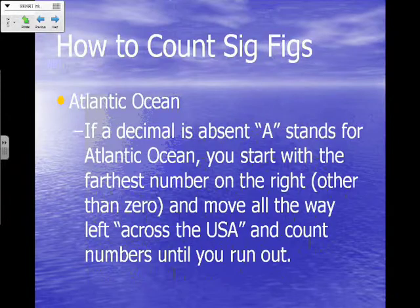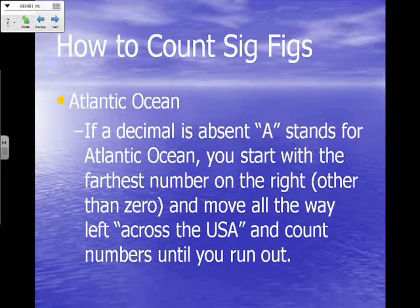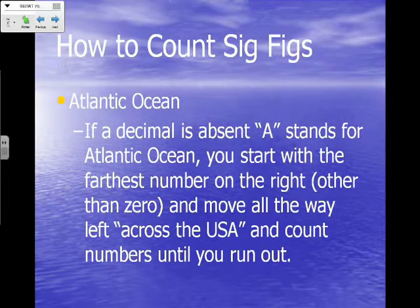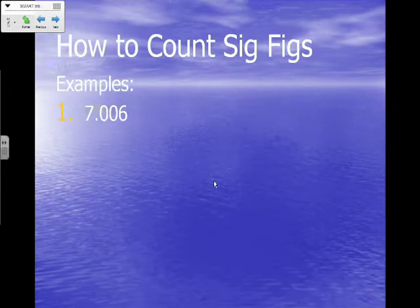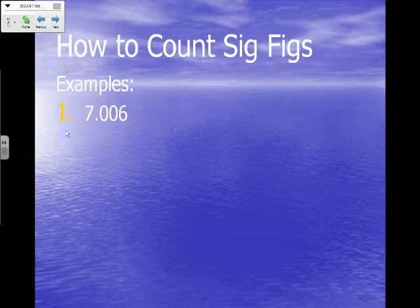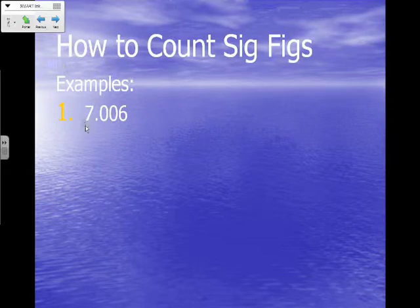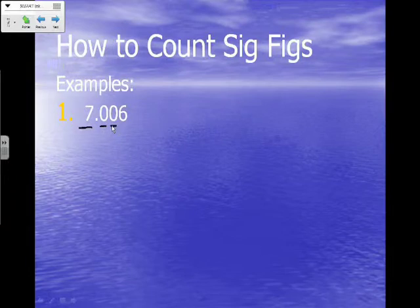When the decimal is absent — meaning you can't see it — the A stands for Atlantic Ocean, meaning you start with the farthest number on the right other than zero and move all the way left and count the numbers until you run out. Our first example is 7.006. The decimal is present, so we start on the Pacific side — the left-hand side. We start counting with the first non-zero digit and never stop until we finish: 1, 2, 3, 4. So this number has four significant figures.